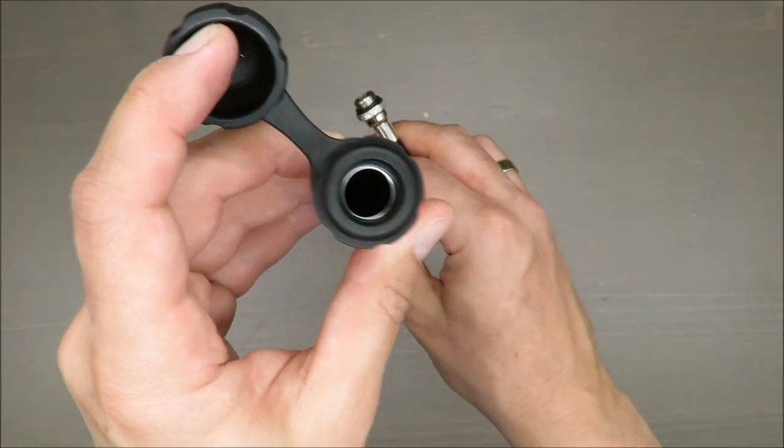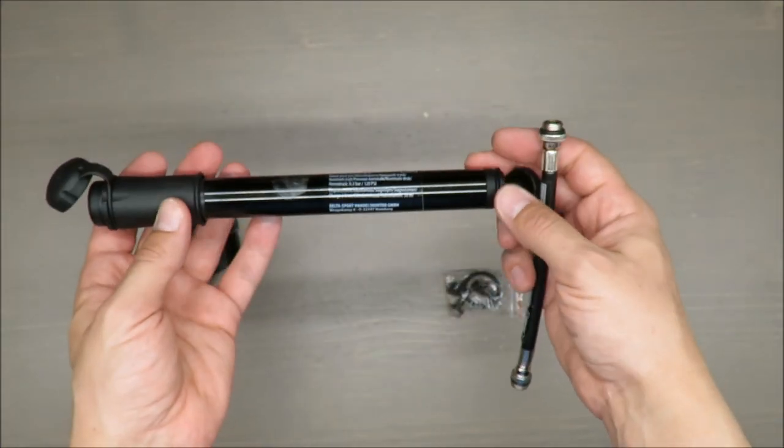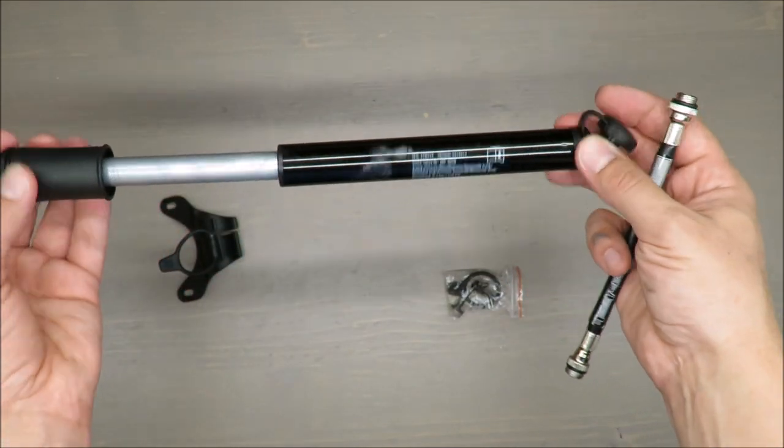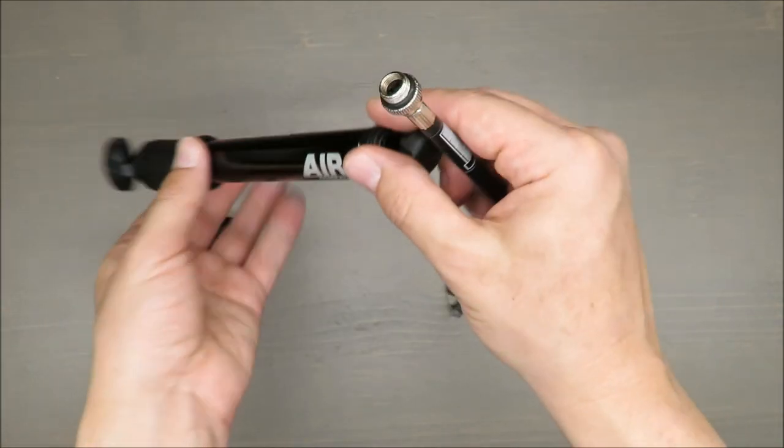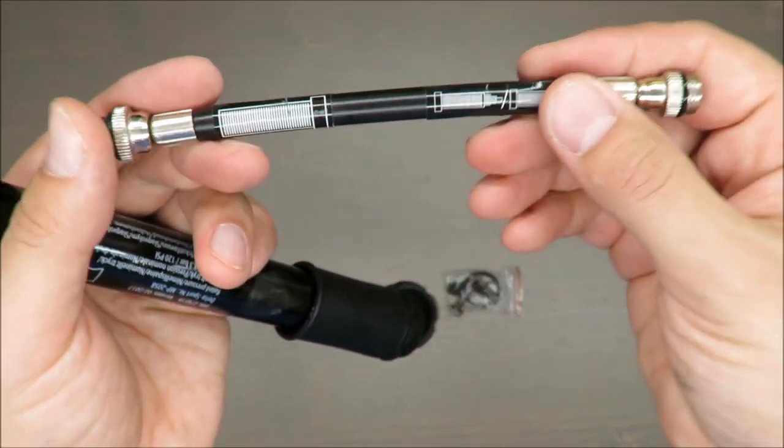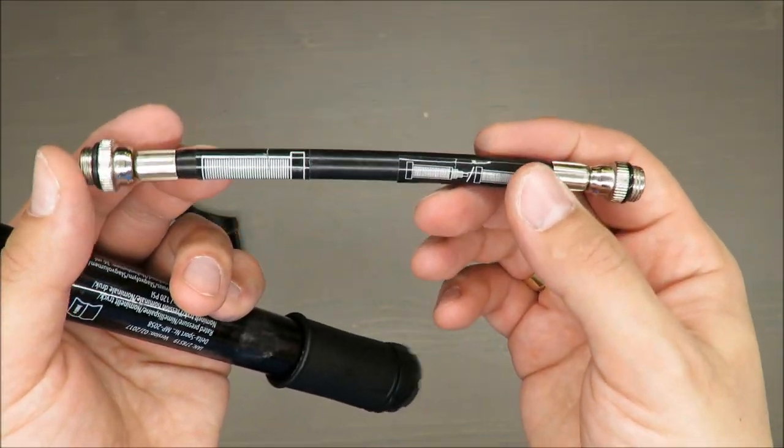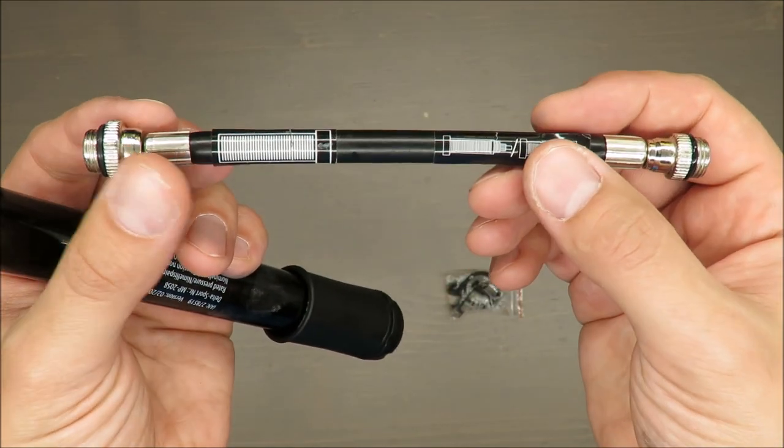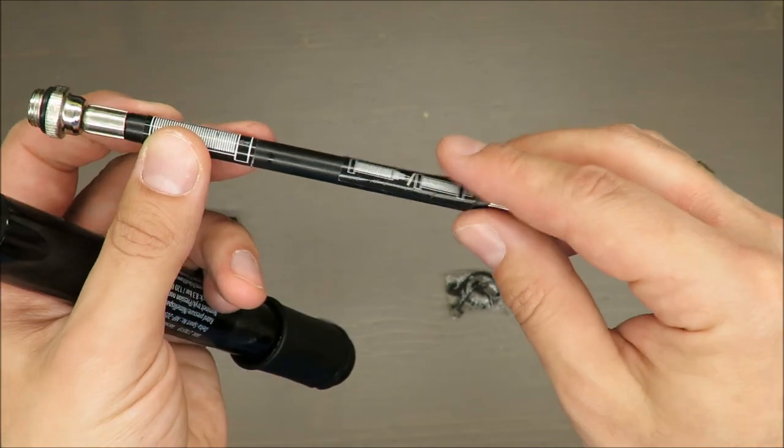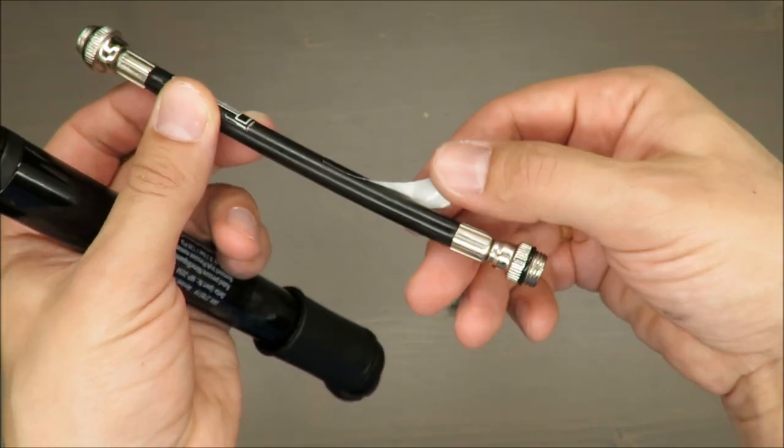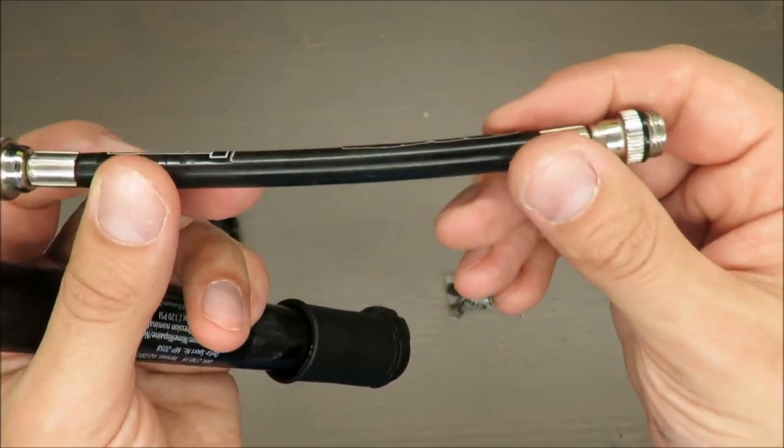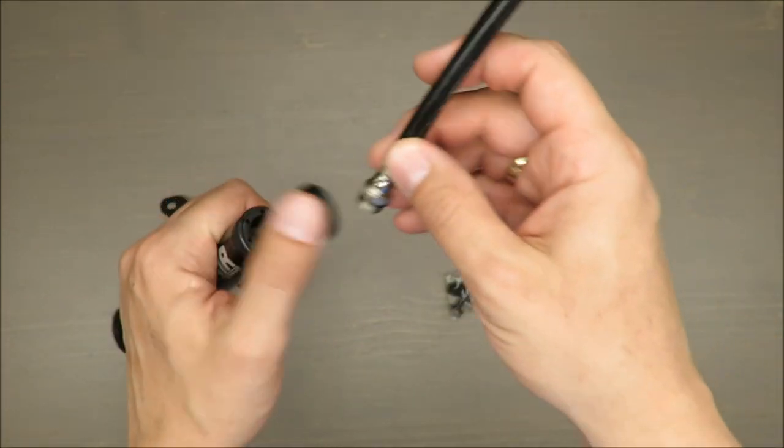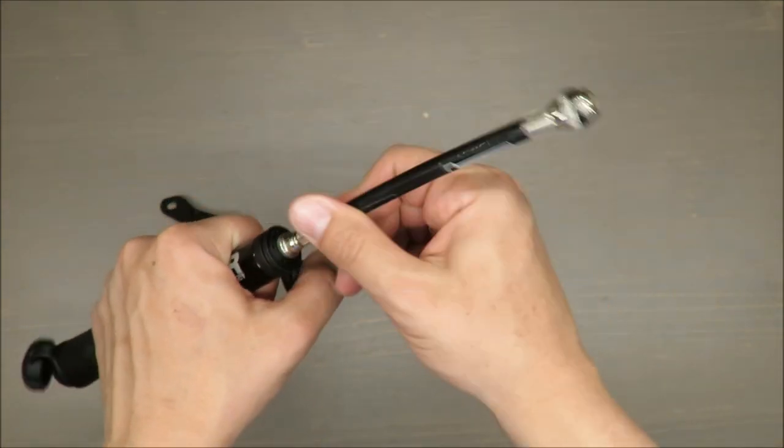Later on I will show you how it's working. But yeah, you can see easily that you have two fittings because it's suitable for American, Dunlop, and Presta valves. You can still find labels on the side, but you cannot mix it.